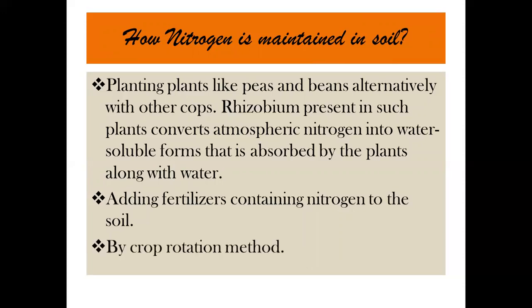The next method is crop rotation. Listen very carefully — what is crop rotation? If you grow one crop continuously, it will take all the important components from the soil, and when you grow it next time those nutrients will be depleted. So when you use one crop one time and a different crop the next time, they will naturally regain their nutrients. That is why we have to use the crop rotation method.